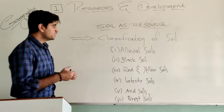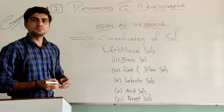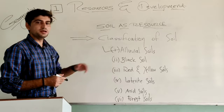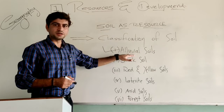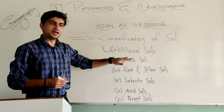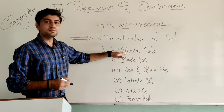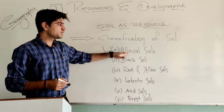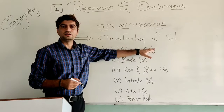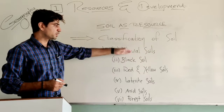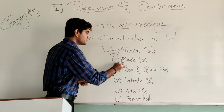Let us recall what we have seen before. Yesterday, we discussed about alluvial soil — the most important soil — and why it is spread in India. We remember about the northern plains, eastern coast, as well as it extends up to Rajasthan and Gujarat. It is important because of its fertility. We also saw further categories: Khadar and Bangar. Today, we are going to discuss about black soil.